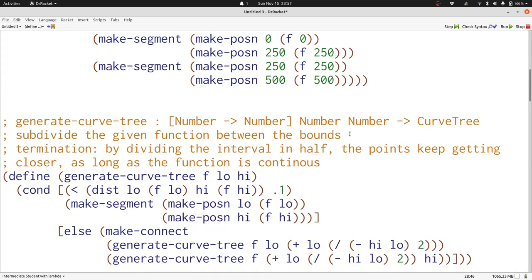Now we've finished writing generate curve tree by writing our termination statement, which describes why this is always going to finish. The fact that the function is continuous is important here, but if you don't remember that, we're not going to worry about it. It's not important for understanding how to write functions like generate curve tree.